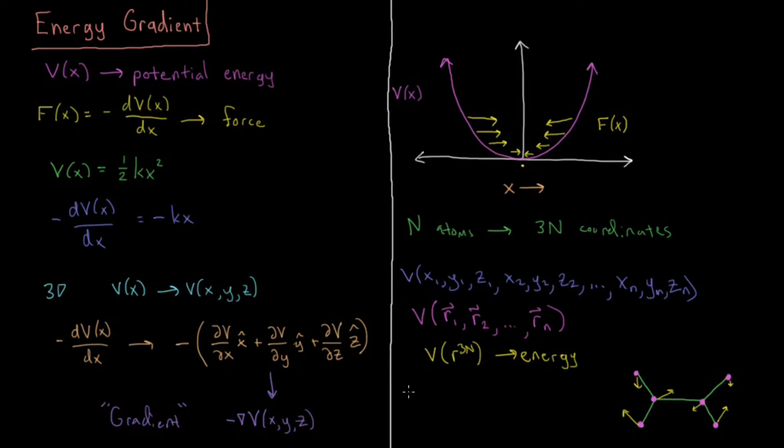And then for our gradient, we have minus del V of r3n, which gives us the gradient. And then the negative of that gives us our forces.